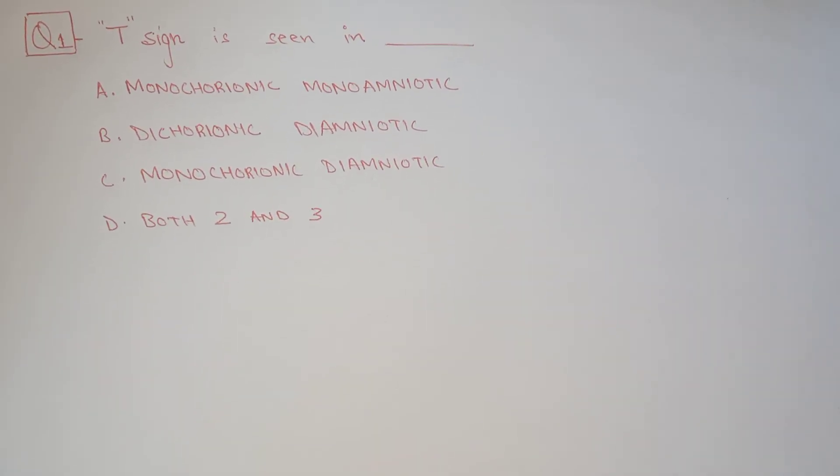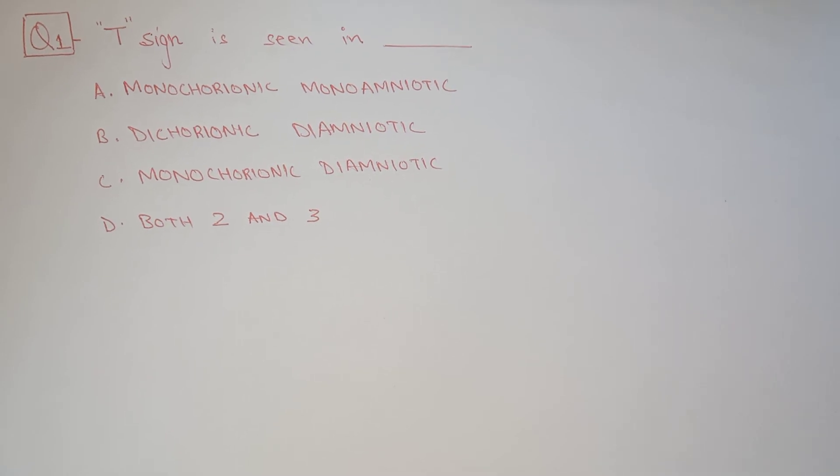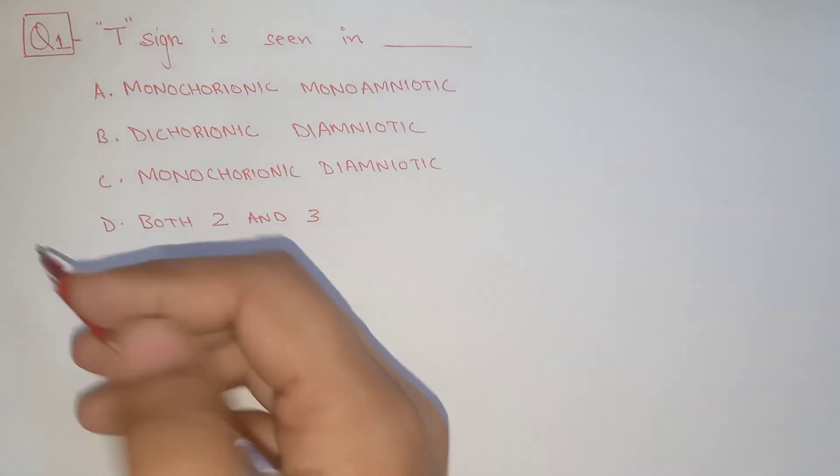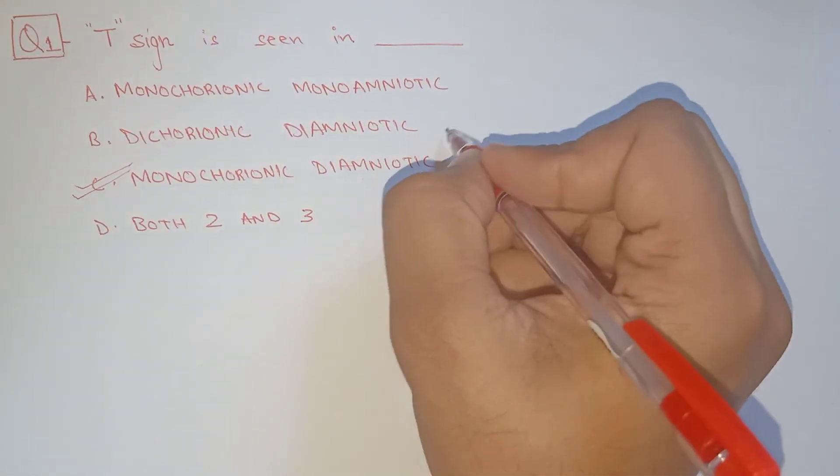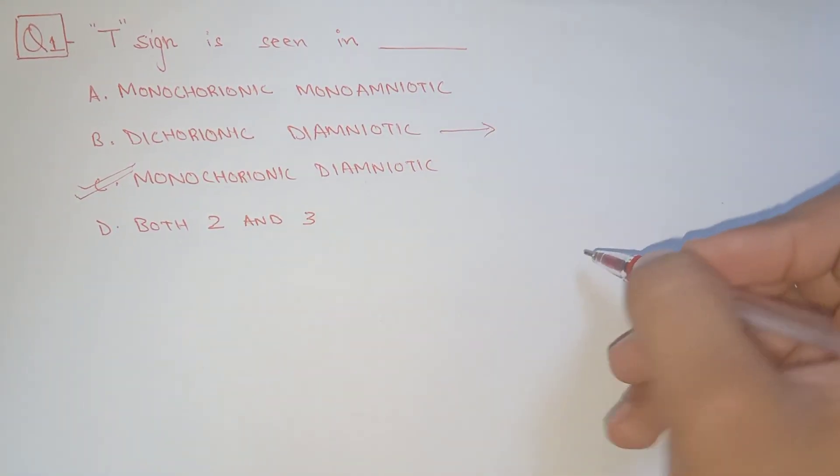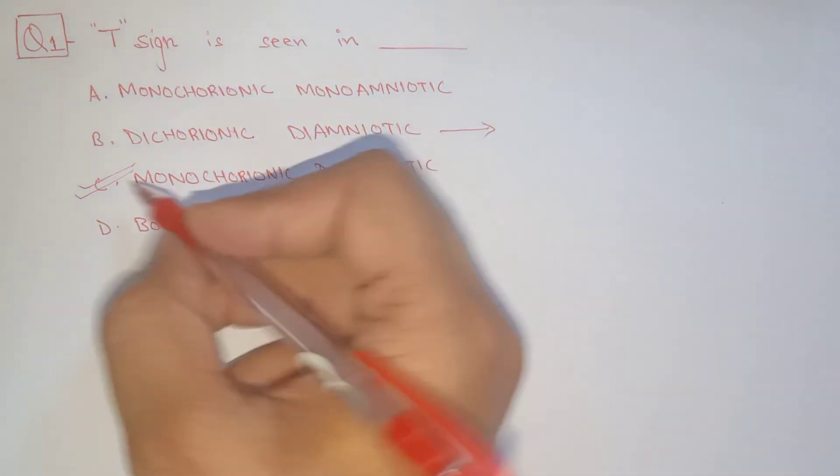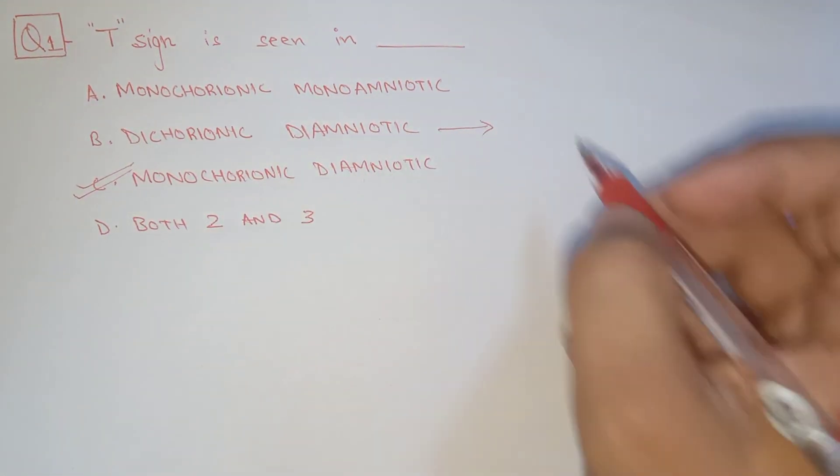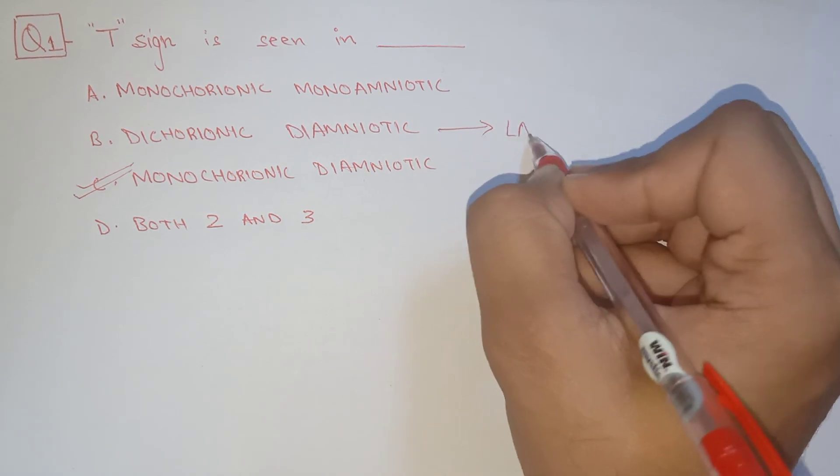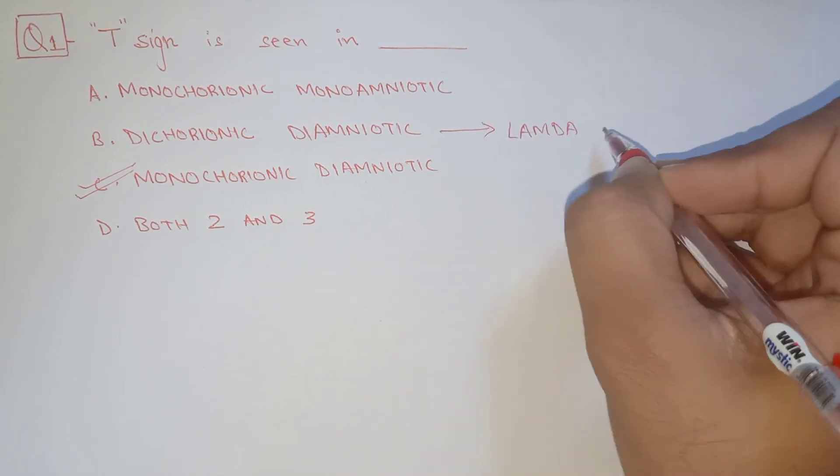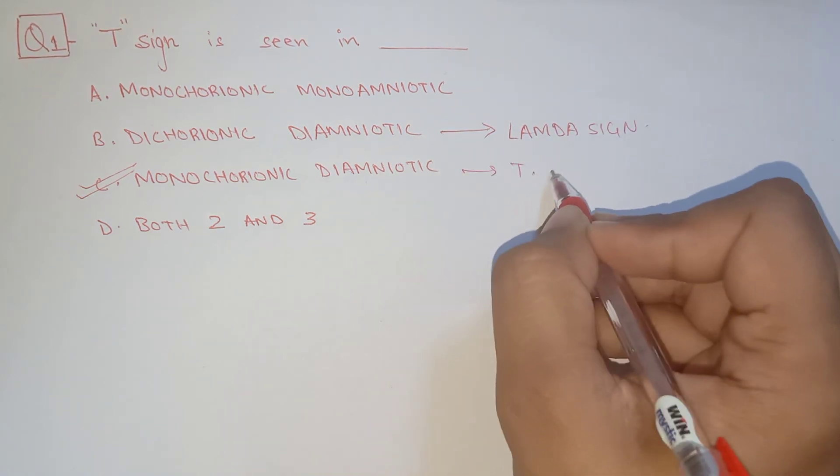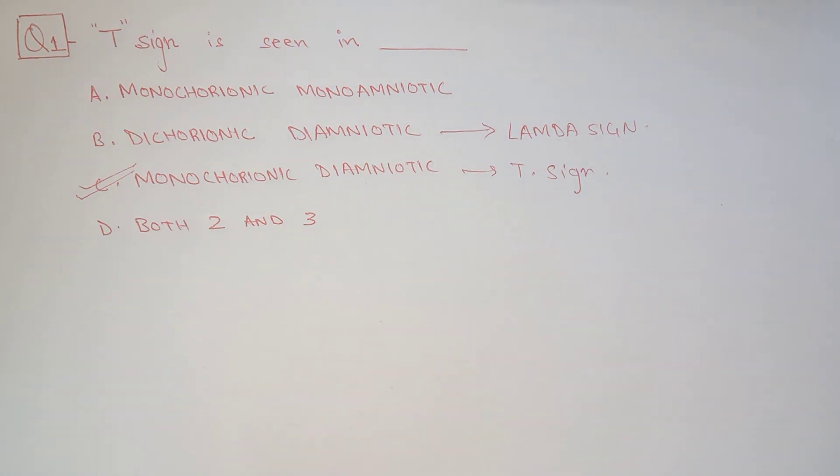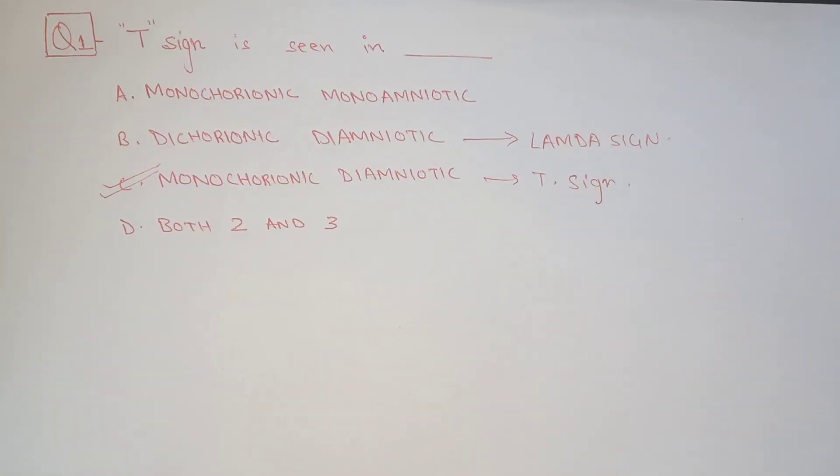Let's go back to this question. The answer for T sign is monochorionic and diamniotic. If the examiner asks about the Lambda sign, then the answer will be dichorionic diamniotic. Lambda sign here, and this is for T sign.